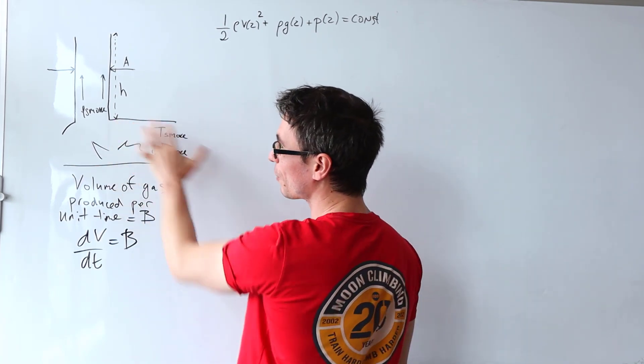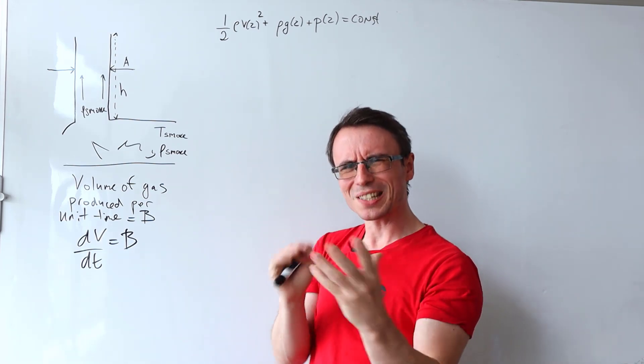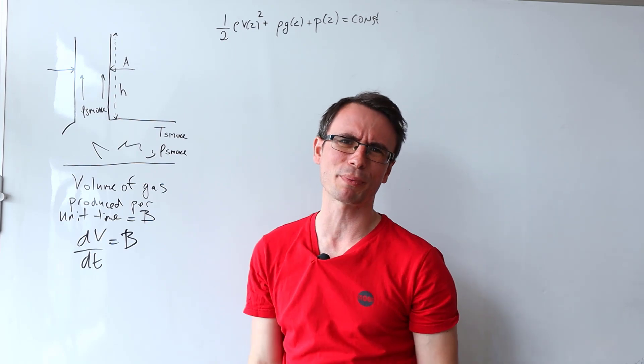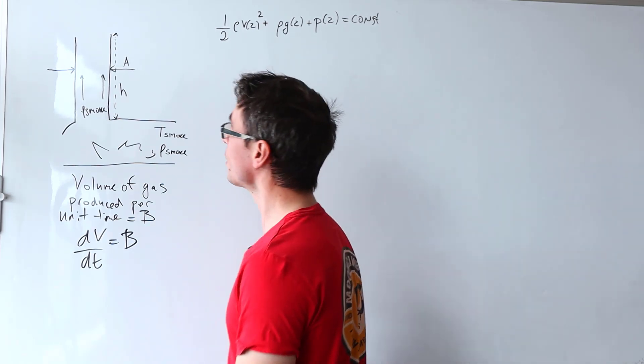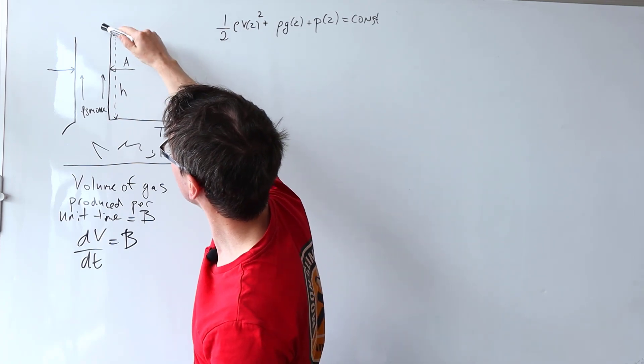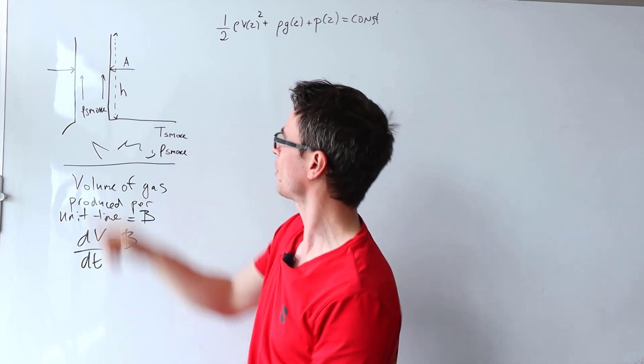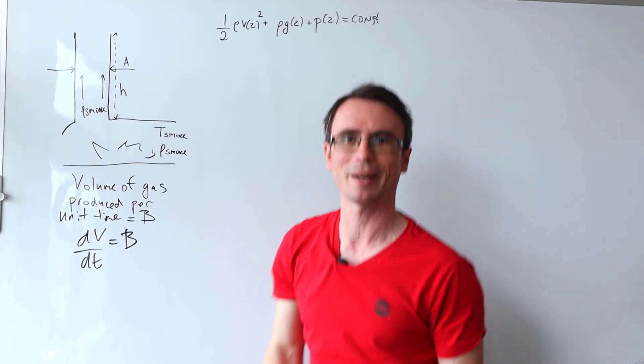We're also given in the question the speed of the particles within the furnace is negligible. But our question is asking about the minimum height. So how are we going to approach this question? The idea is that we're going to use the Bernoulli principle to try and calculate the speed at the top of the chimney.